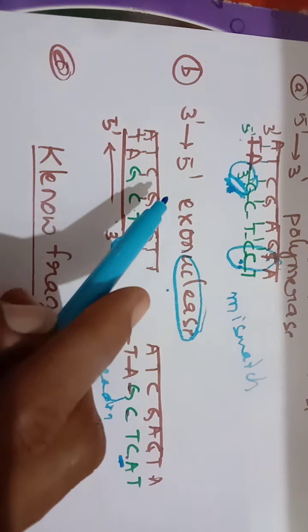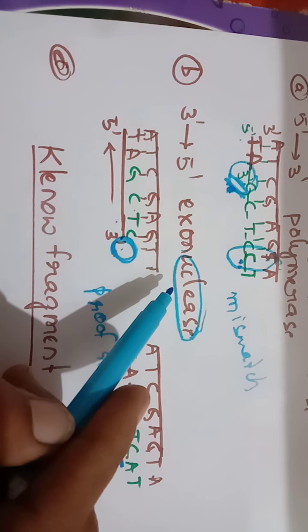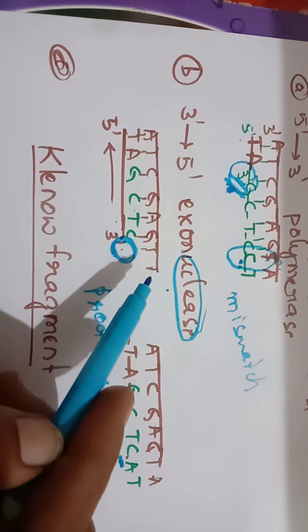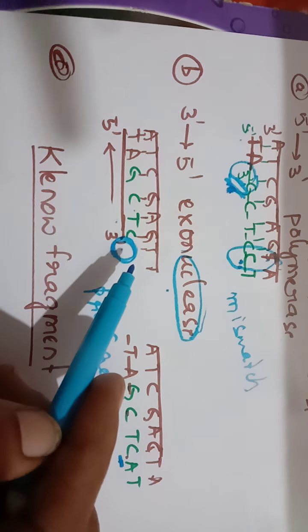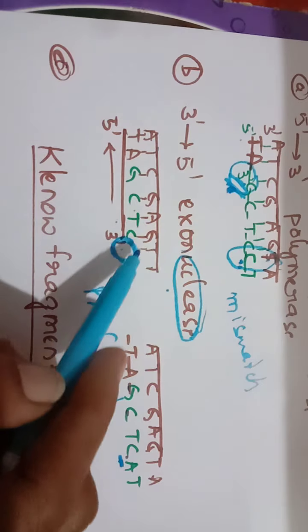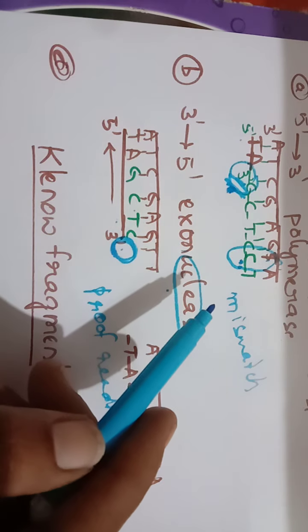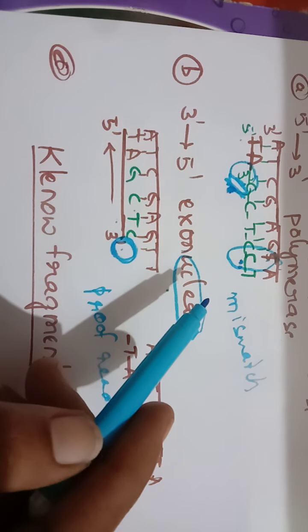So DNA polymerase I has three activities: 5 prime to 3 prime polymerase activity, 3 prime to 5 prime exonuclease activity, and 5 prime to 3 prime exonuclease activity — which goes in the opposite direction.